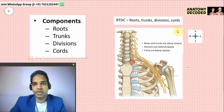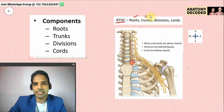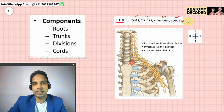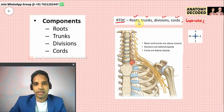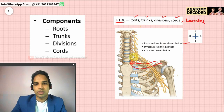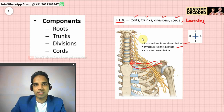Now let us cover the various components of the brachial plexus. There are four major components, remembered by the mnemonic RTDC: R stands for roots, T stands for trunk, D stands for division, and C stands for cords. Cords further give branches. Roots and trunks are located above the clavicle, divisions are behind the clavicle, and cords are below the clavicle — an anatomical landmark to identify the various locations of brachial plexus components.